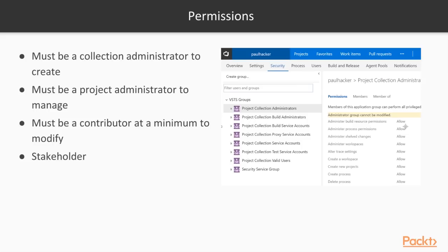To manage a project you must be a Project Administrator — one step below the collection administrator, managing just their own project. To work with artifacts inside the project — creating builds, work items, viewing reports, checking in code — you need Contributor permissions, which is the default given to users when you add them to a team project. Lastly, Stakeholder permissions allow a user who doesn't need to modify check-ins, builds, or reports to still access the project.